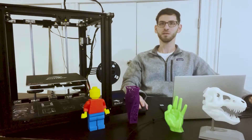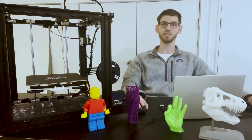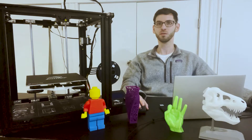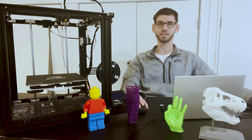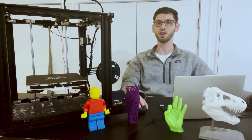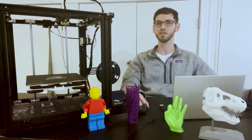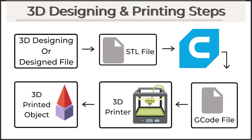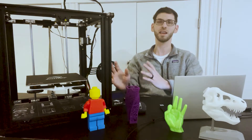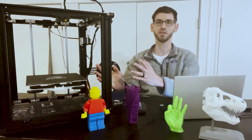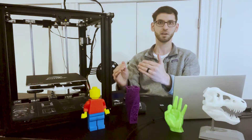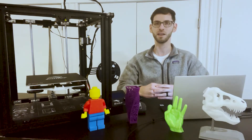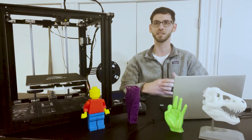Hi everybody and welcome to another episode of the 3D Print Zone. In this video I'm going to be doing a Cura tutorial. Cura is essentially a third-party free software that you can use to convert an STL file to G-code, and G-code is basically just a language that a 3D printer can understand and interpret so it knows how to build your model.